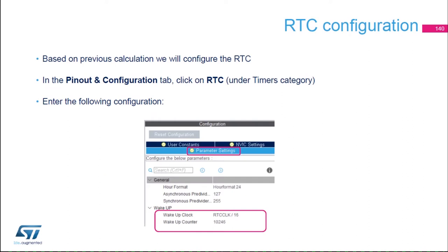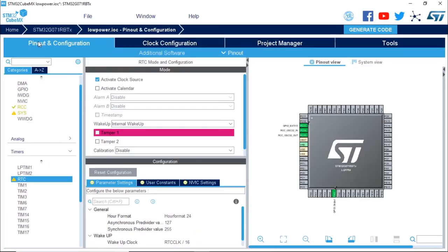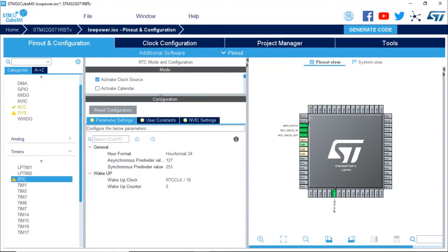Now we're going to configure the RTC in CubeMX. In the Pinout and Configuration tab, clicking on RTC under Parameter Settings, we're going to enter RTC clock divided by 16 for the Wake Up Clock, and 10,246 for the Wake Up Counter as we calculated on the previous slide. I'm going to go back to the RTC, open the configuration Parameter Settings, enter RTC clock divided by 16, and enter 10,246.